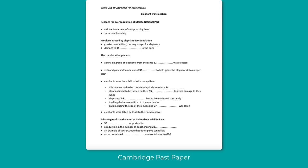Number one: greater competition causing hunger for elephants. I'm emphasizing the word 'hunger' because in this lesson I'm talking about what I call word prompts or prompt words. These are words that you hear in the listening text and are also on the question paper. These specific words help you keep your place and they are stressed. So in this example, we're listening for the word 'hunger' before we get to the gap fill. The gap fill says 'damage to something in the park,' but you won't hear the word damage — that will be a synonym.